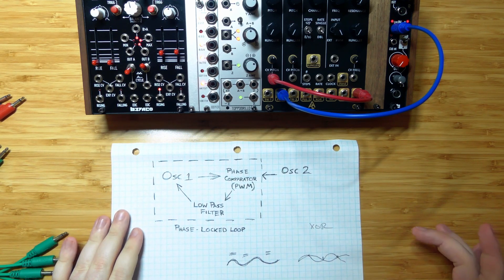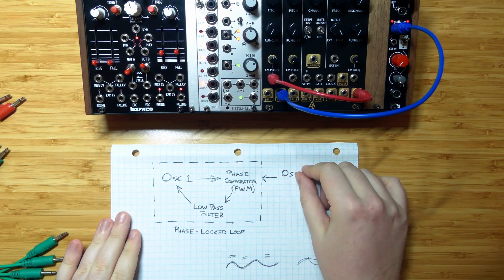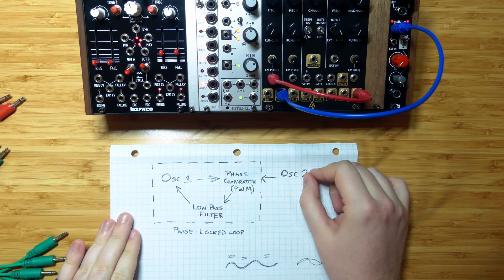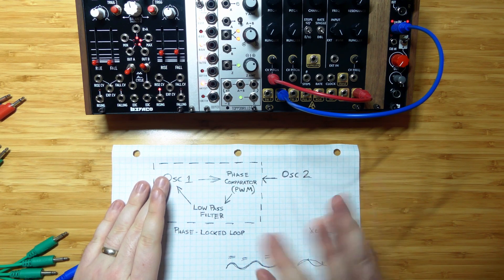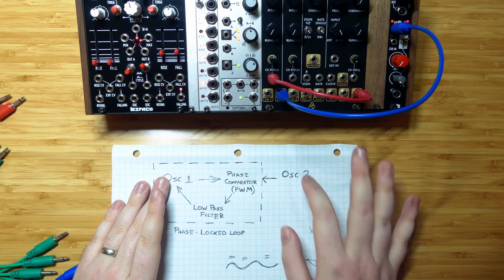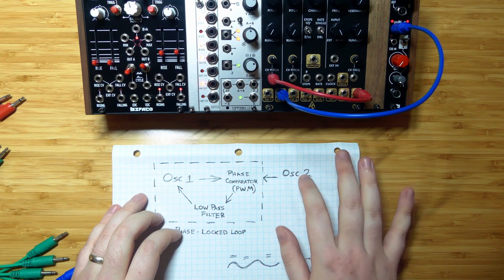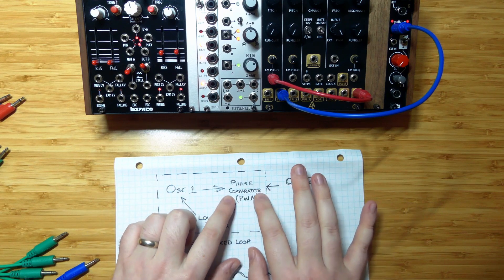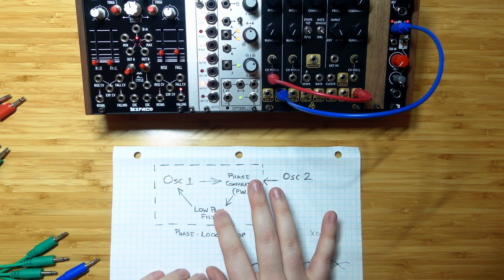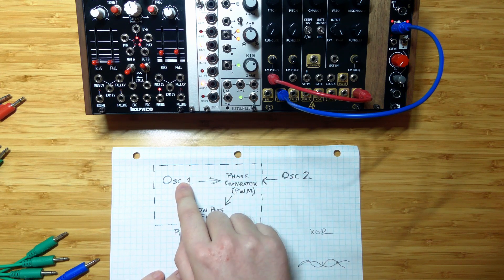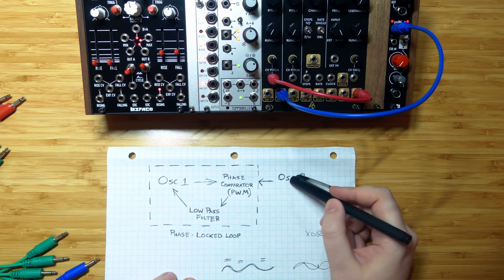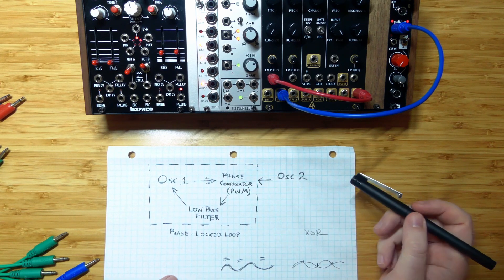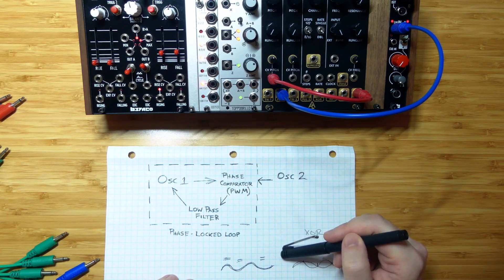The whole idea of a phase-locked loop is that you have some audio source, some signal, and you would like another oscillator to track the frequency — the pitch — of that incoming signal. But you don't have any information about the pitch except for the audio waveform itself. The phase-locked loop takes these two signals, compares their phase, smooths that through a low-pass filter, and then runs that into the pitch control on your following oscillator. The reasoning behind this is that if the two oscillators have the same frequency and the same phase, their waveforms should be relatively identical to each other.